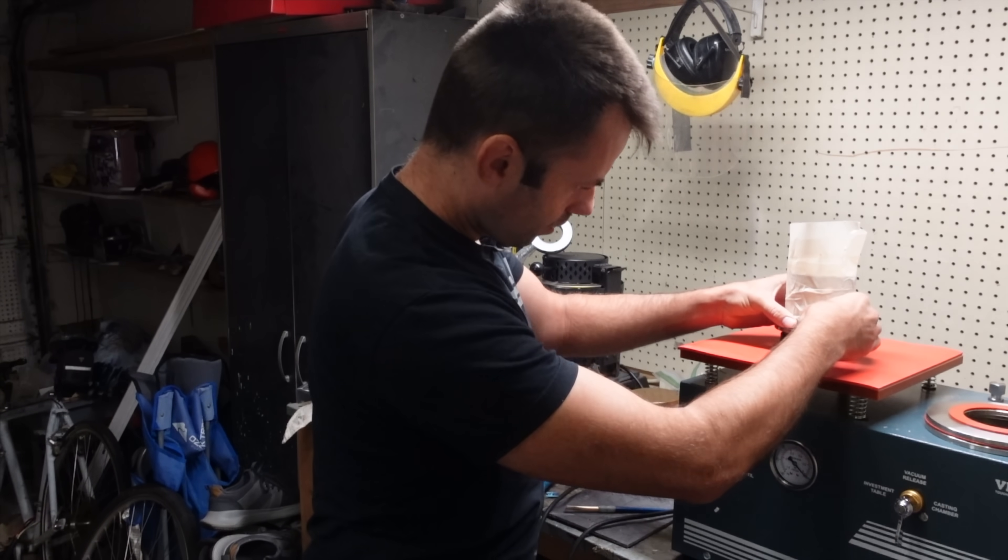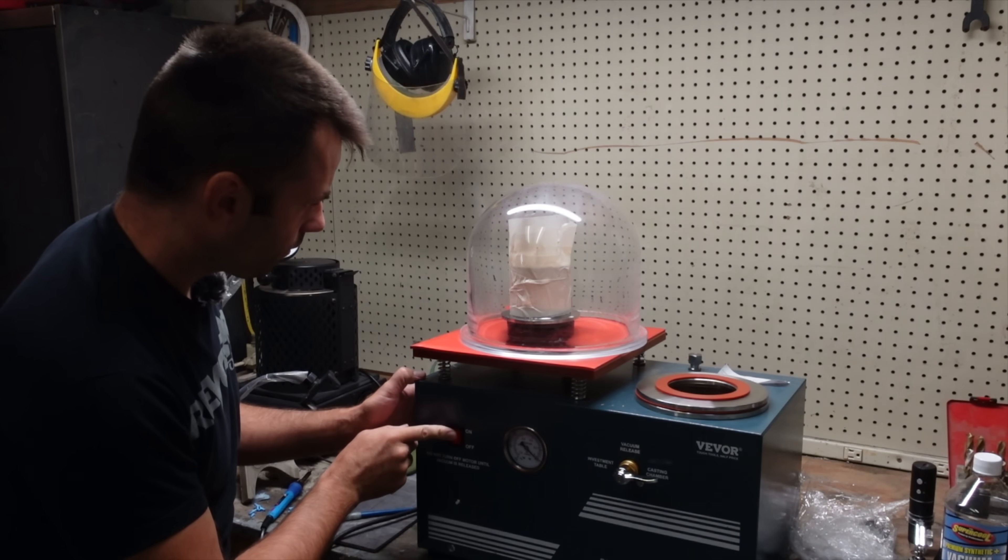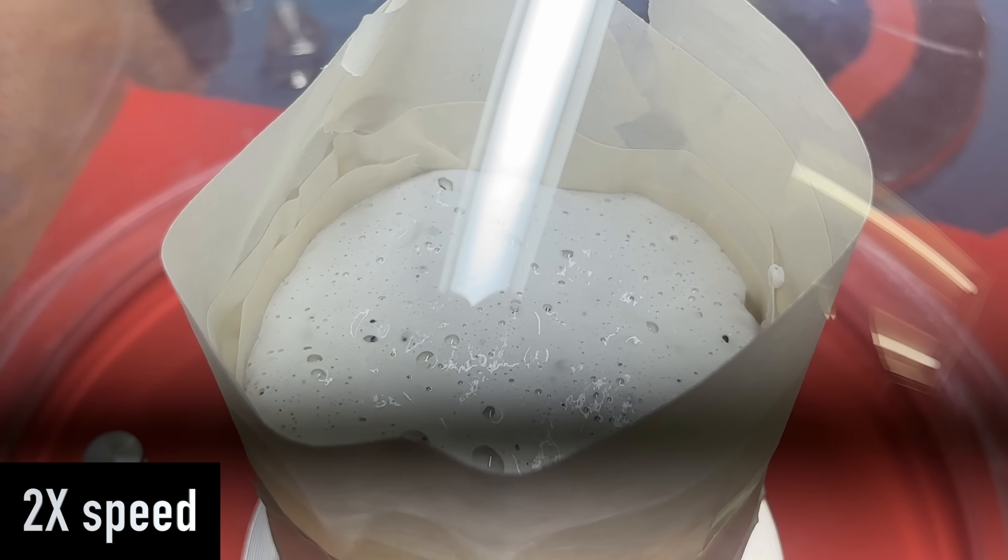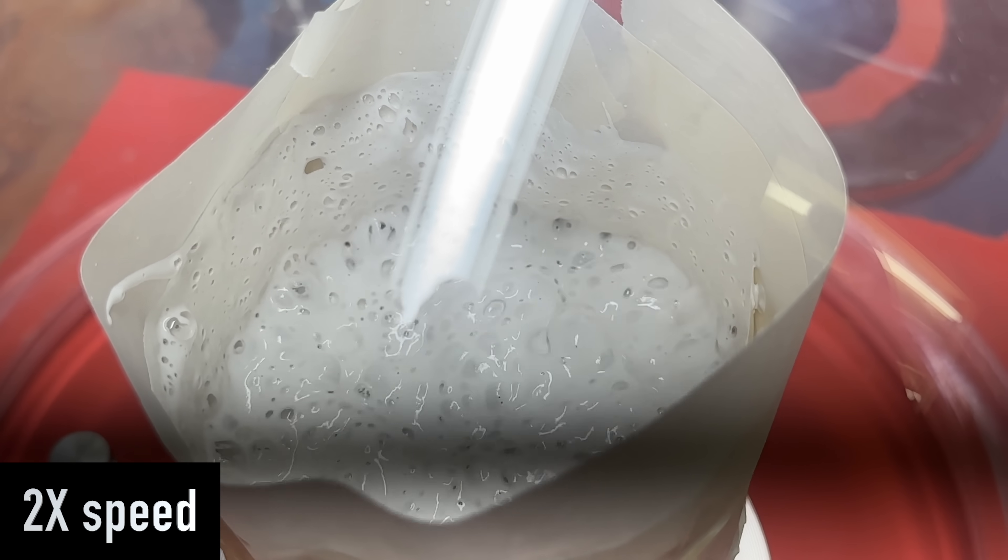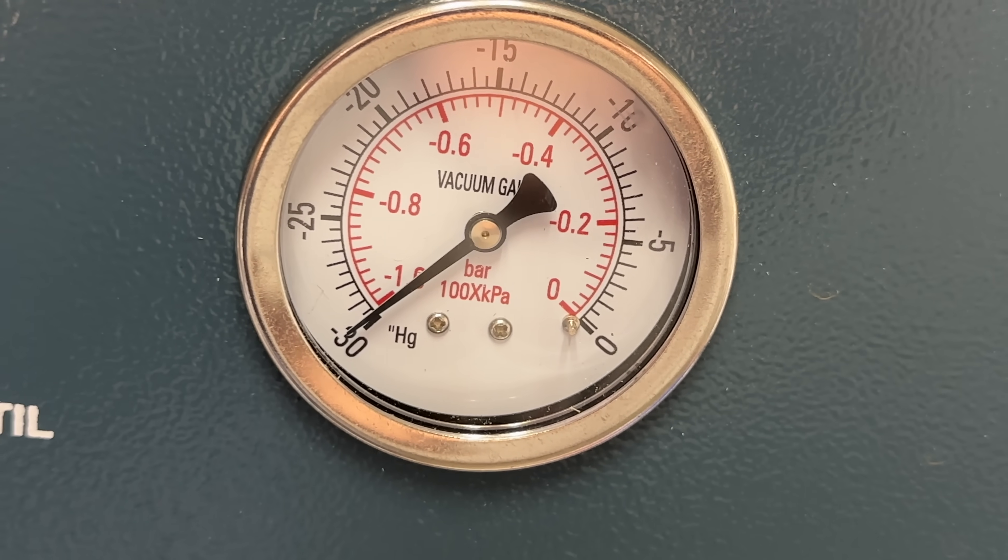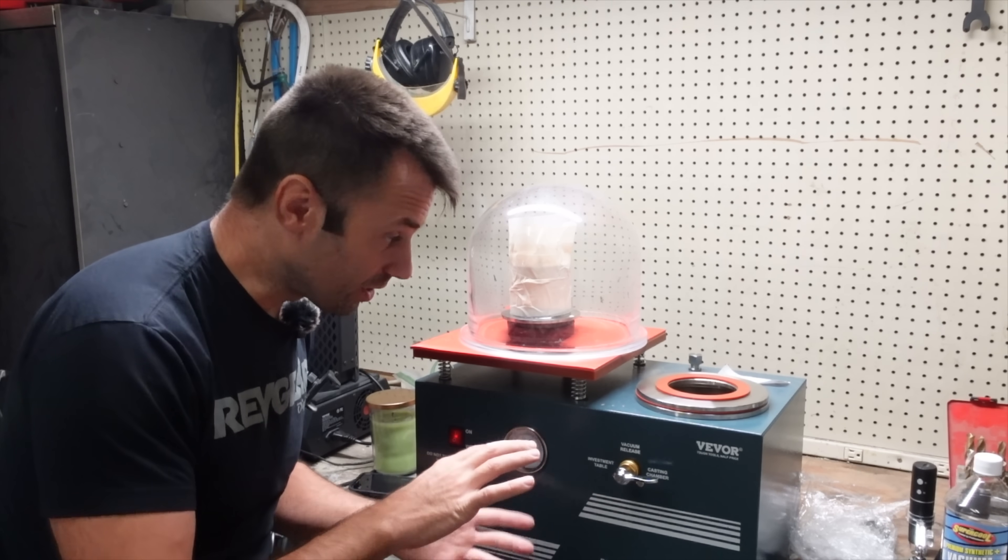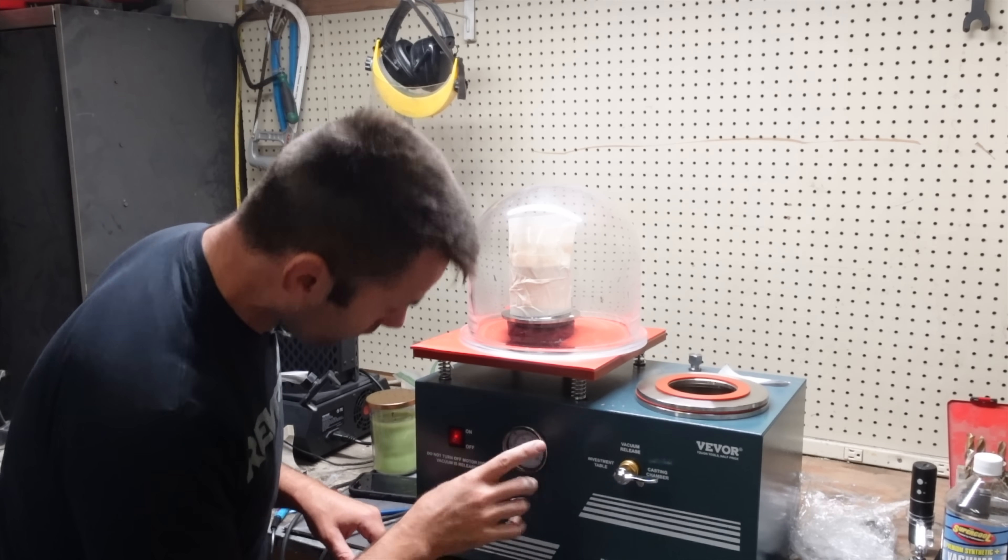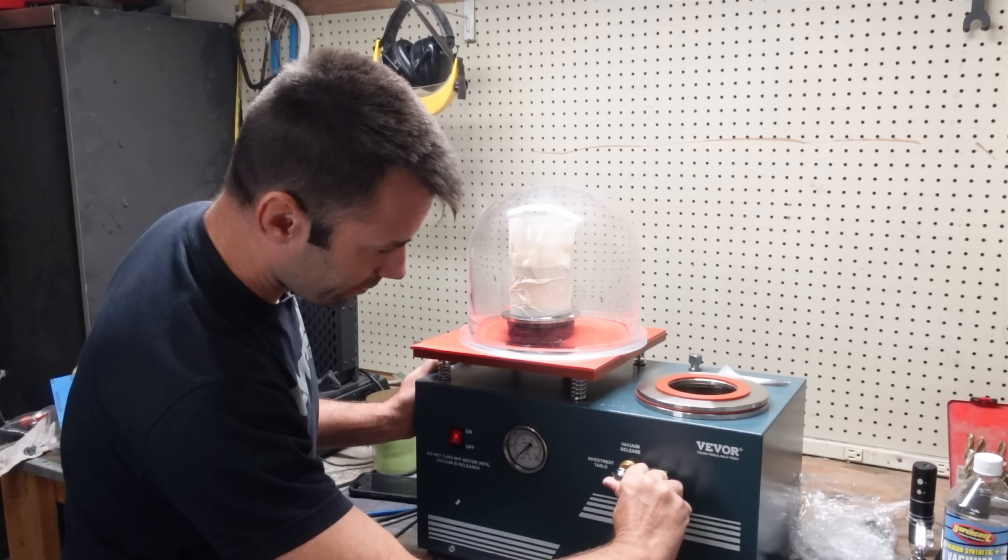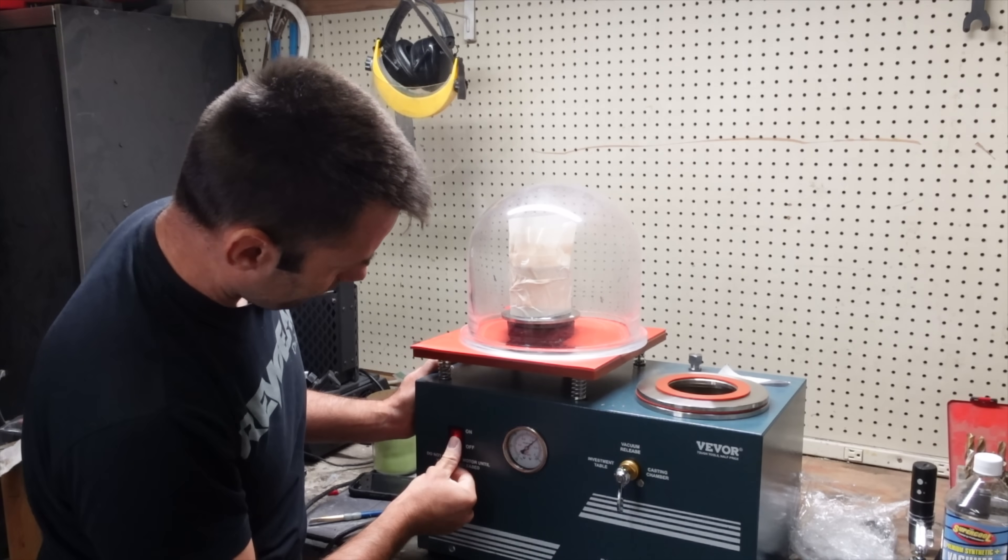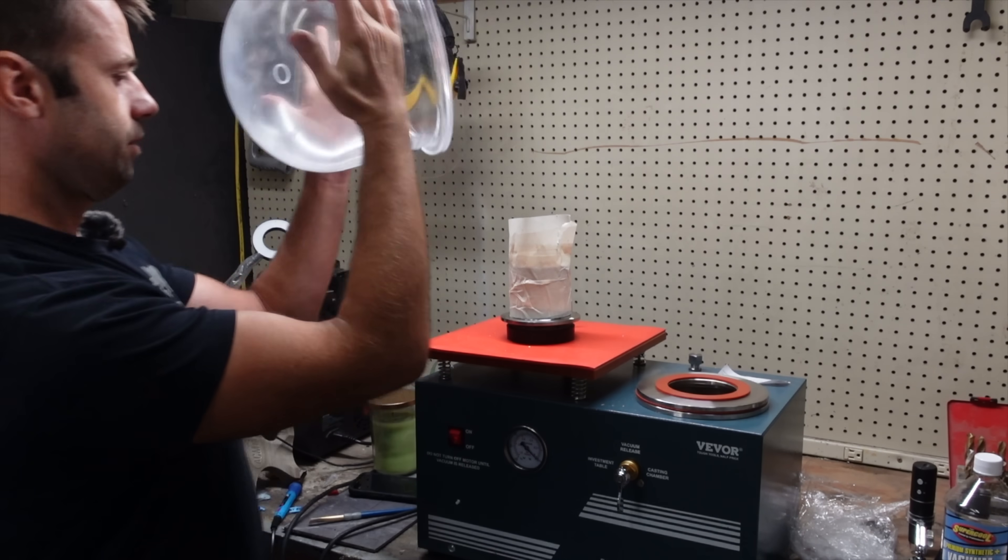That goes like so and like so and I turn it on. Investment table on. That draws a pretty strong vacuum. So I believe this machine has a 4.3 CFM pump. It seemed like that might be a little undersized but it's not at all. That sucked the air out right away. Good and then shut it off. Very nice.